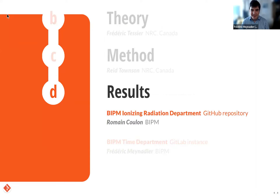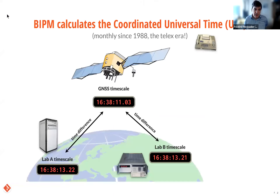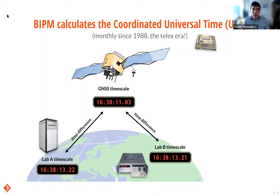Thank you, Romain. I'm Fredrik, from BIPM — from the time department. In these slides I will explain how Git is currently integrated into our workflow. One of our main tasks is to calculate every month the Coordinated Universal Time, or UTC. That is done by collecting the data from around 80 countries in the world that contribute by supplying their clock data. The predominant method nowadays to do that is by satellite comparison. I've put an example of comparison through GNSS, which is the generic name for GPS, GLONASS, GALILEO, BEIDOU, etc. — navigation systems used for time transfer.